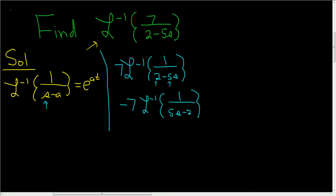We're almost there. We need to have a coefficient of 1 in front of our s. So I'm going to pull out a 5 from the denominator. So this is negative 7 fifths inverse Laplace of 1 over s minus 2 fifths. Pulling out 5, and you can check. 5 times s is 5s. And then 5 times negative 2 fifths is negative 2. Beautiful stuff. And now we're ready to use the formula.